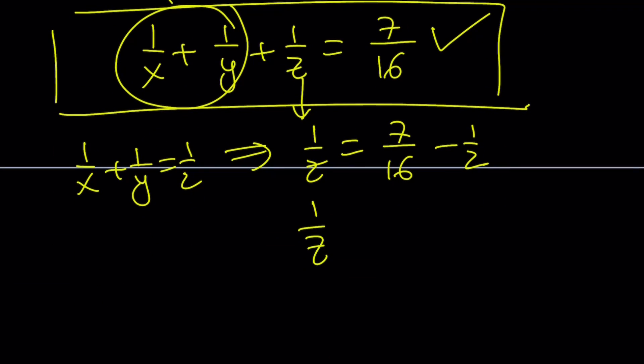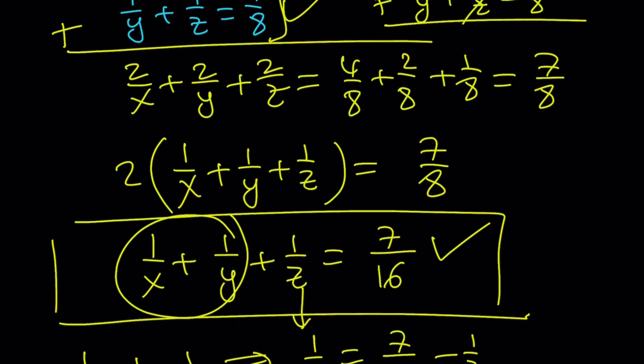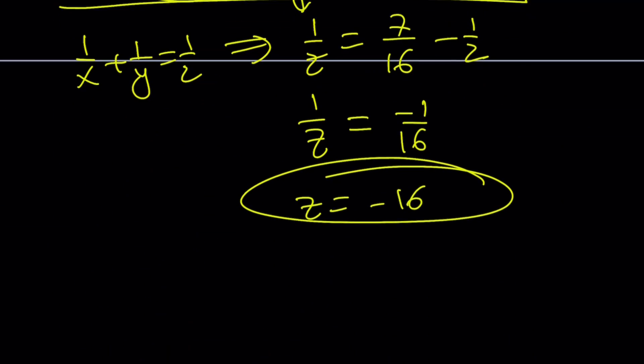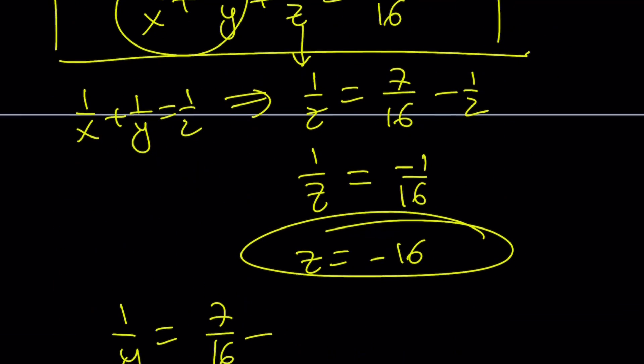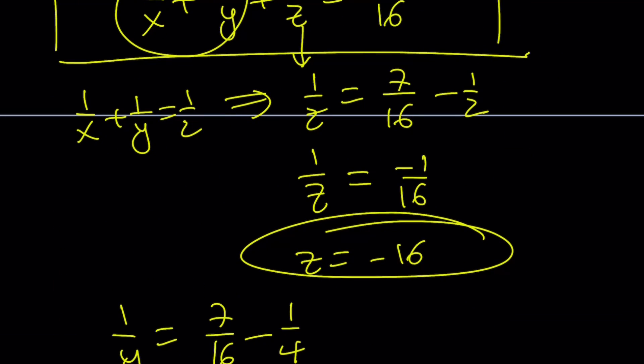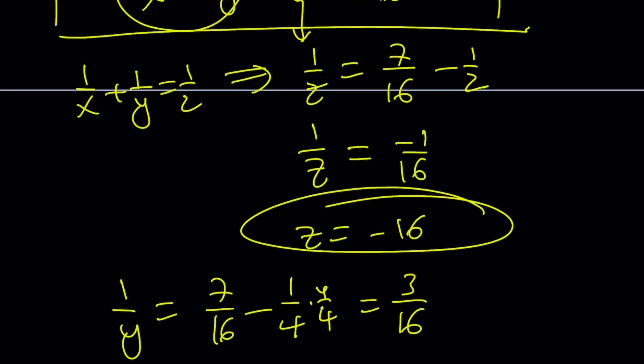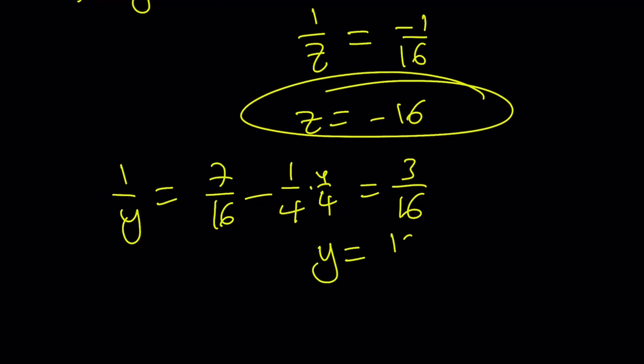From here, we get one over z equals seven over sixteen minus eight over sixteen is going to be negative one over sixteen. And by flipping, you're going to get z equals negative sixteen. Great. That's done. What about the second one? One over x plus one over z. So, one over y is going to be seven over sixteen minus the second sum, which is one-fourth. But this is just four over sixteen, and that's going to give us three over sixteen, which means y is going to be sixteen over three.